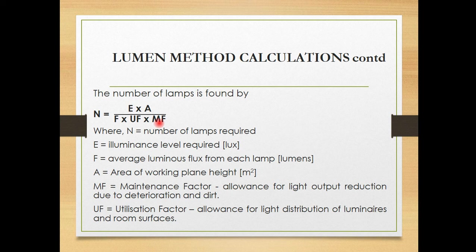The maintenance factor accounts for light output reduction due to deterioration and dust. Normally lamps gather dust over time, which may reduce their efficiency. The utilization factor accounts for the light distribution of the luminaires and the room surfaces, since different luminaires give different light distributions.